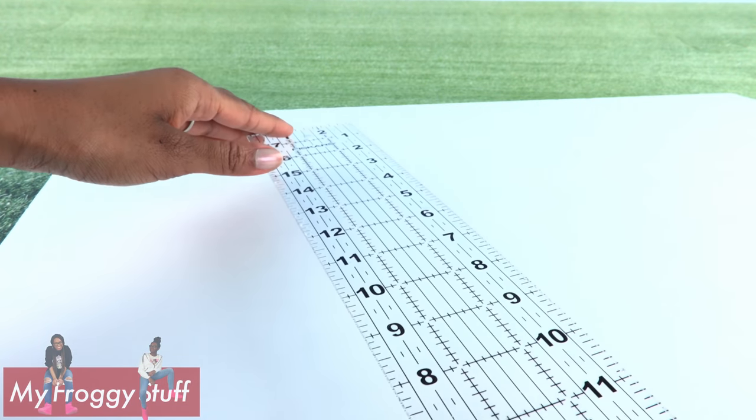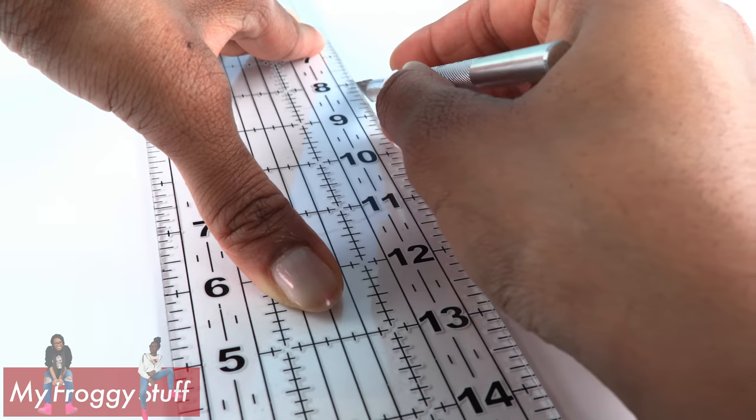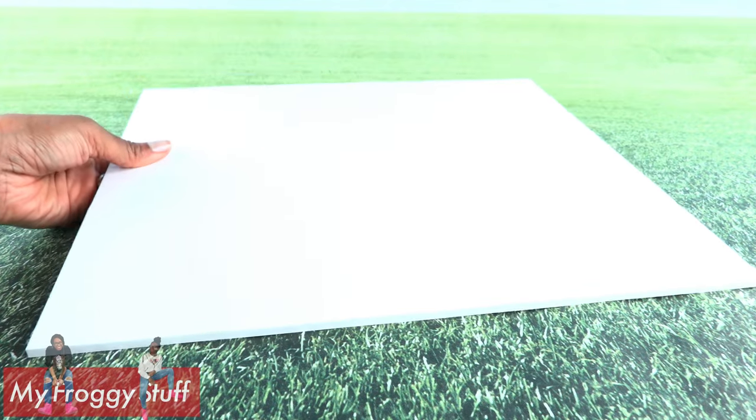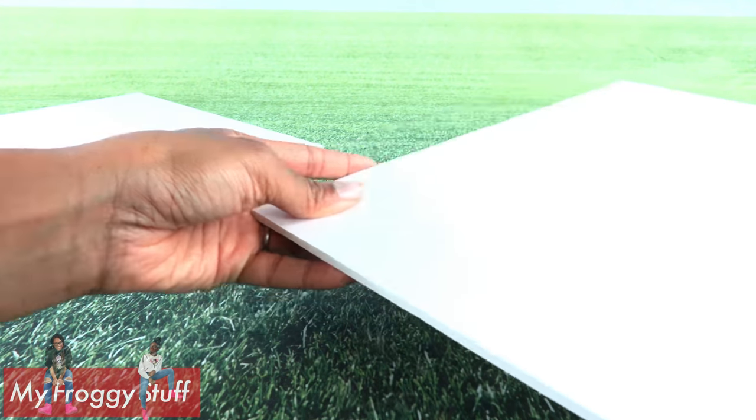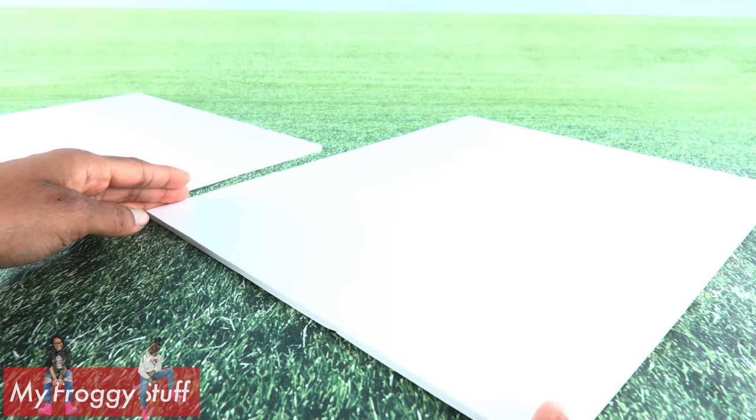I start by measuring a 13 inch by 15 inch rectangle. Cut on the line drawn to use for our back wall. I cut a second rectangle that is 15 by 12 inches to use for the floor.